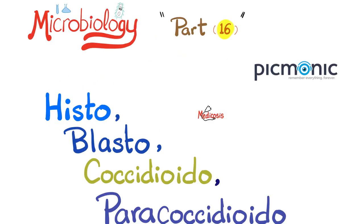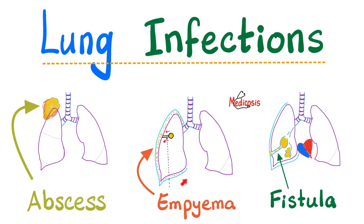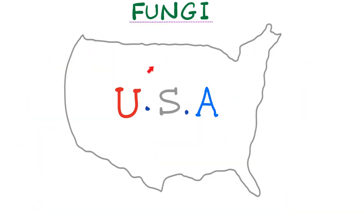Histoplasmosis is found in the Ohio and Mississippi River Valley. It is the most common systemic fungal infection, at least in the United States. It is contracted by inhalation — specifically, inhalation of dust contaminated by bat droppings.